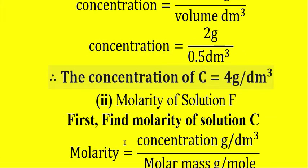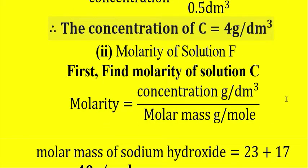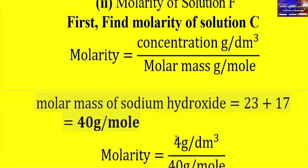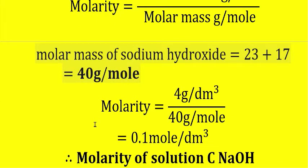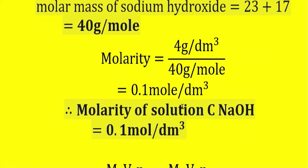To find the molality of solution F, we cannot go directly to mass over volume because our solution contains water of crystallization, which is unknown. So first, find the molality of solution C. Molality of solution C equals concentration divided by molar mass. The molar mass of sodium hydroxide is 40. Therefore, the molality of solution C (sodium hydroxide) is 4 divided by 40, which equals 0.1 mol per decimeter cubed.